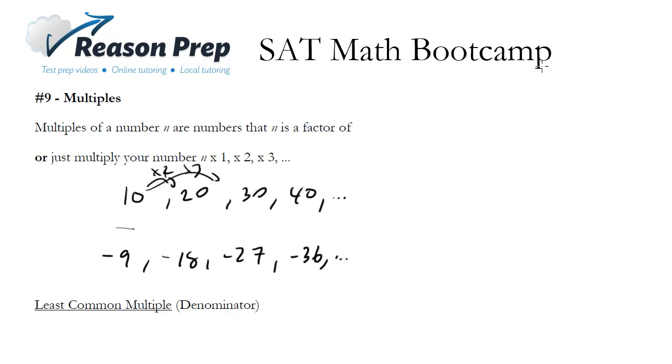That's pretty much what a multiple is, doesn't go much farther than that. Notice that these are numbers of which 10 is a factor. So 10 is a factor of 20, 10 is a factor of 30, 10 is a factor of 40. That's the first definition, which is nice, but we don't really need it. We just gotta remember to multiply it by certain numbers.